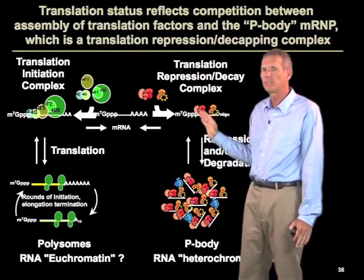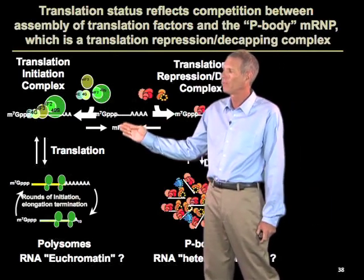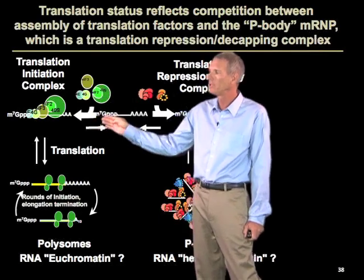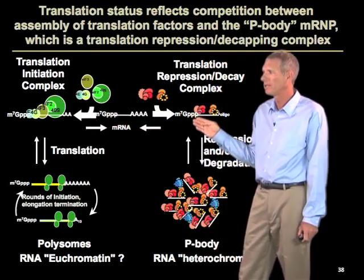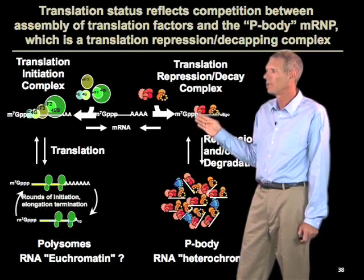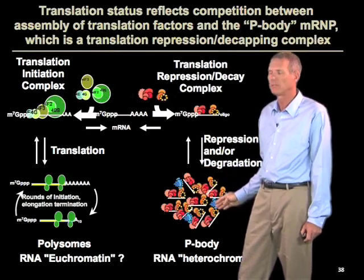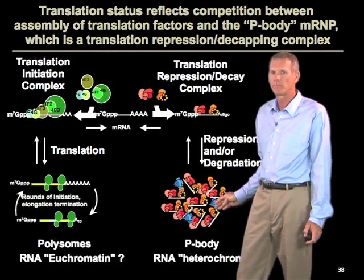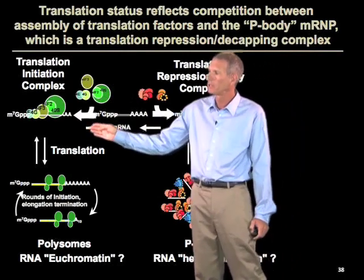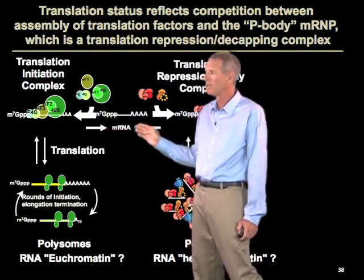I want to emphasize this because in the past we've tended to think about whether an RNA can translate or not really is a function of how well it interacted with initiation factors. But what we've learned now is that in fact there's a competing so-called repression complex which can also drive the RNA into a repressed state, which can then assemble into these larger aggregates that we can even see in the microscope. And the function of an mRNA is really in some sense perhaps dictated by its distribution between these two different competing assembly pathways.